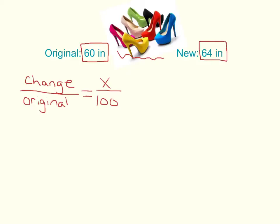Here's our formula. We first have to find the change — just how much did our numbers change? This one's easy: we have 60 and 64. I always take the largest one and subtract the smallest one: 64 minus 60. It changed 4 inches, and the original was 60 inches.